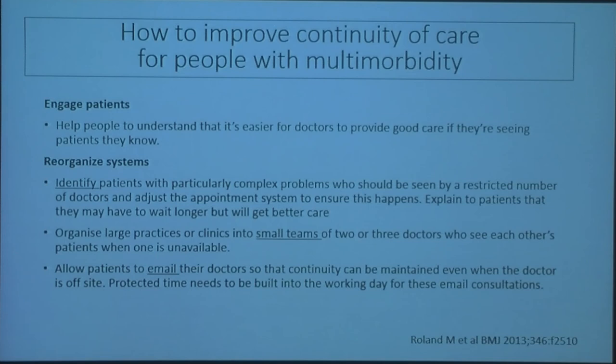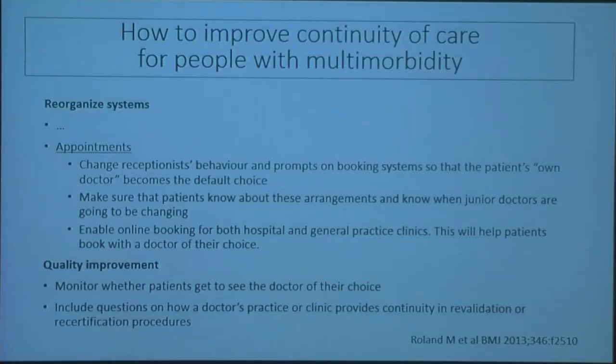Because I don't have time, I cannot take you through these two slides. This is a paper by Martin Rowland, who will be also presenting later today, about how to improve continuity of care for people with multimorbidity, which basically focuses on engaging patients, reorganizing the systems, and using quality improvement techniques which focus on improving continuity of care.